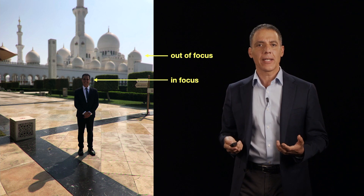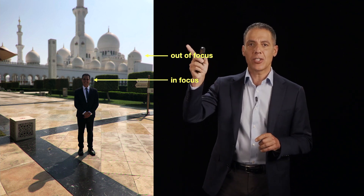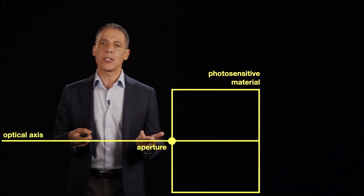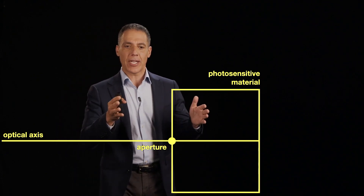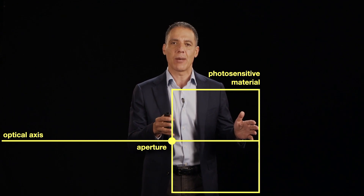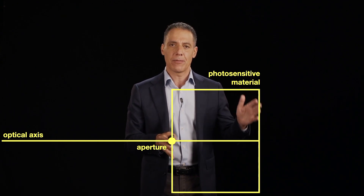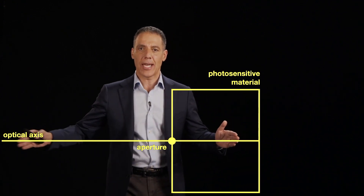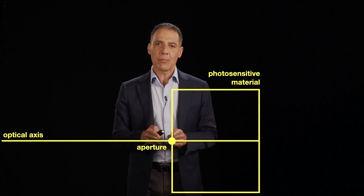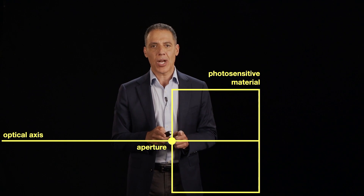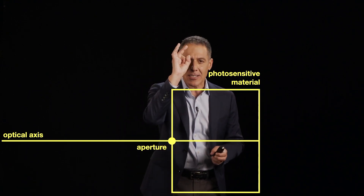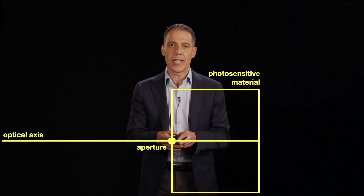The reason our current model can't explain this phenomenon is that it's not complete — it's close, but not quite there. Let me remind you of the model: we have our camera, the aperture at the front, the photosensitive material at the back, and the optical axis. We'll work in 2D again. The problem is this little aperture — it's not what a modern camera looks like. A modern camera doesn't have a tiny aperture through which only one single ray of light passes.